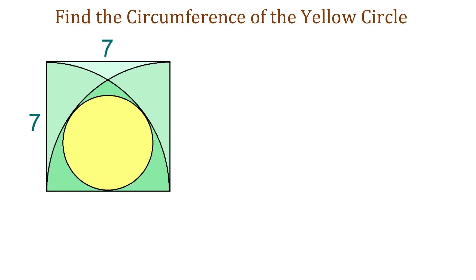Hello, in this figure we have a square with each side of 7 units and 2 quarter circles. The yellow circle and the 2 quarter circles are internally tangent and these are the points of tangency. The yellow circle is also tangent to the square at this point.